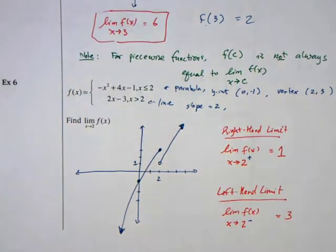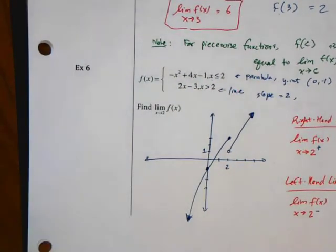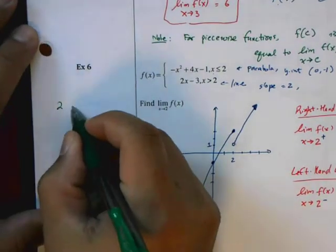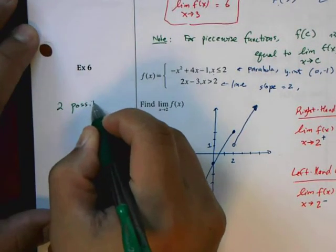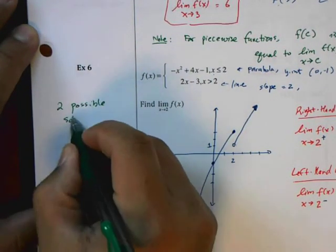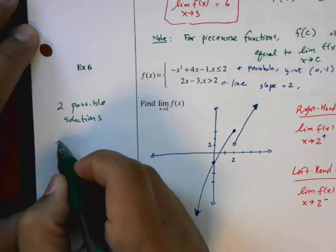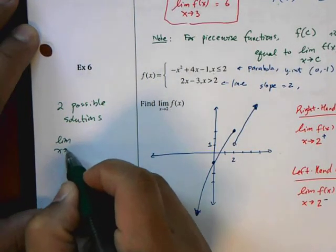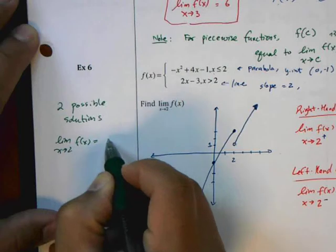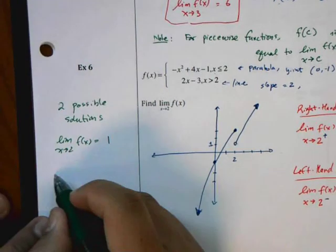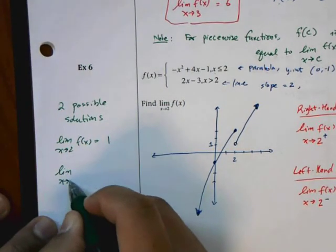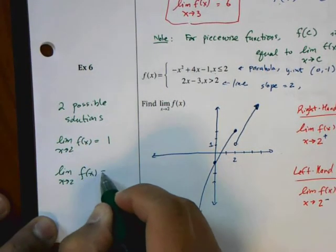So we have two solutions. We have two possible solutions, and I'm going to write this on the side here. One of them is to say that the limit as x approaches 2 of f(x) is equal to 1. The other one is to say that the limit as x approaches 2 of f(x) is equal to 3.